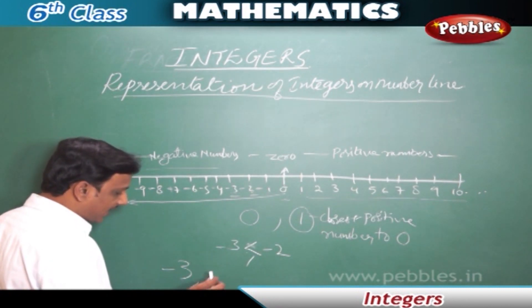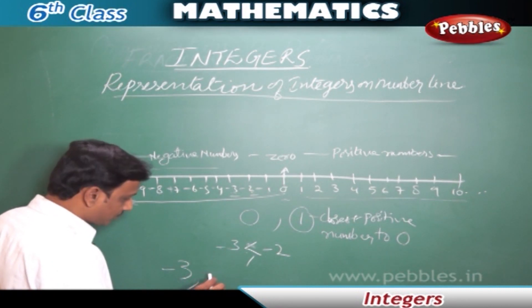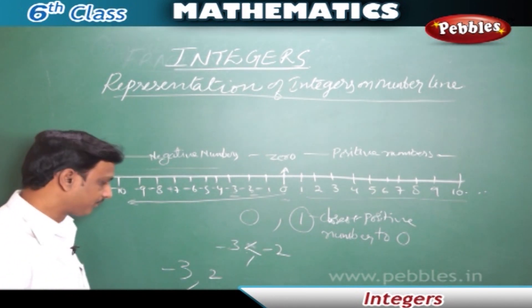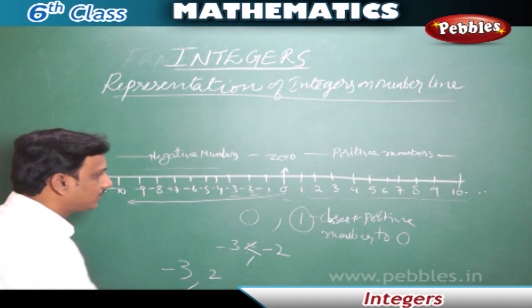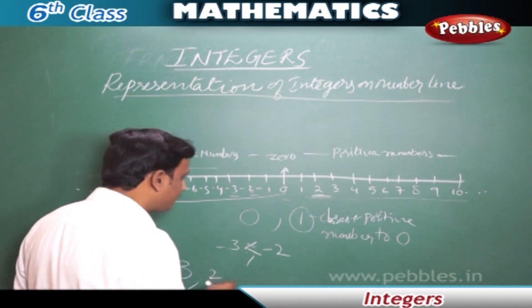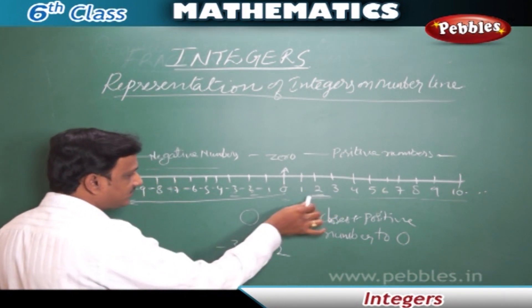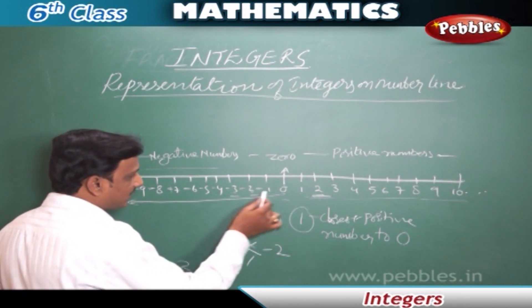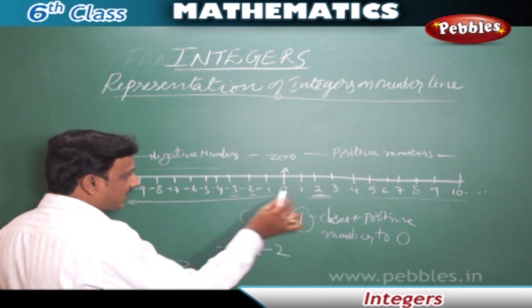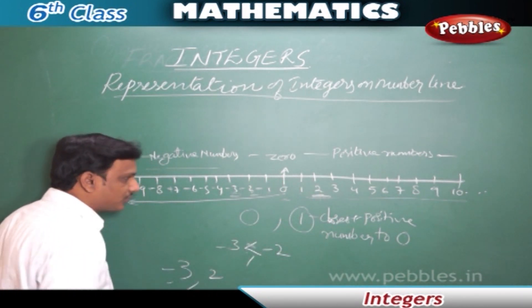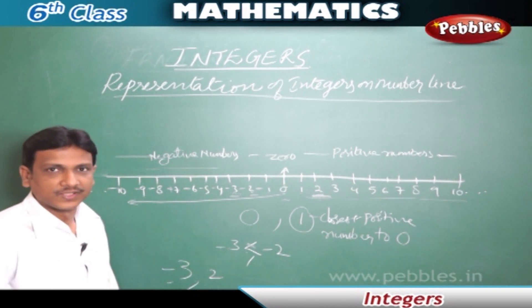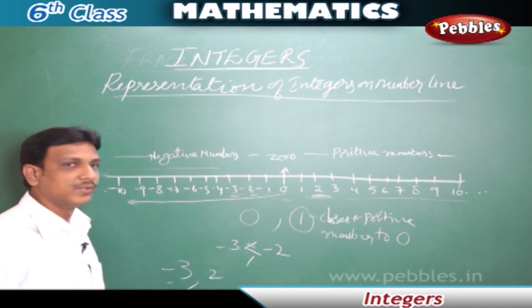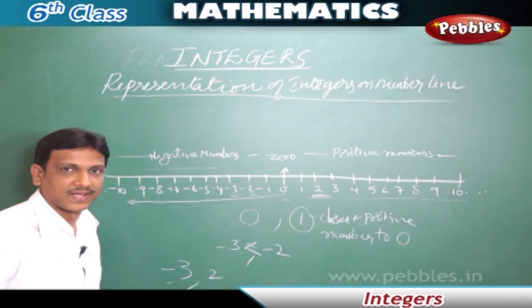Now let us see minus 3 and 2 — which one is bigger? 2 is a bigger number because 2 is a positive number on the right side of 0, whereas minus 3 is on the left side. There are five places difference between minus 3 and 2, so 2 is the bigger number. In this way, we can locate integers — both positive and negative numbers — on a number line.